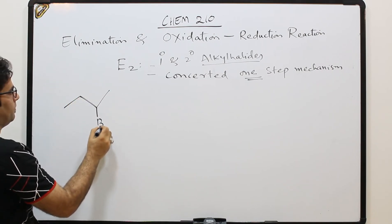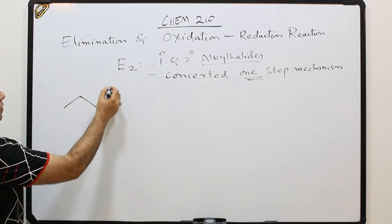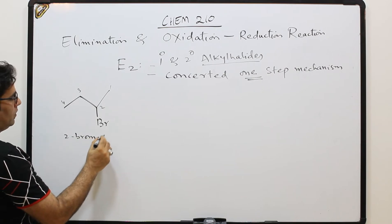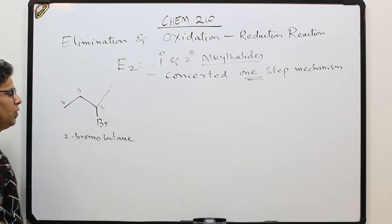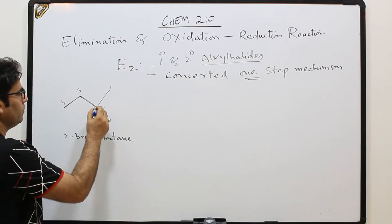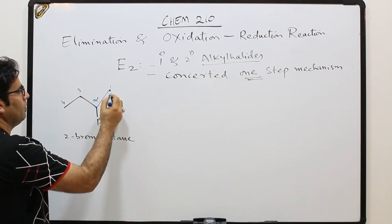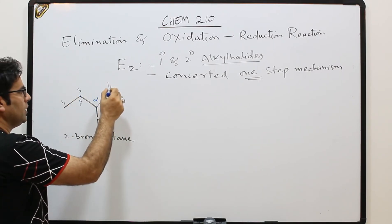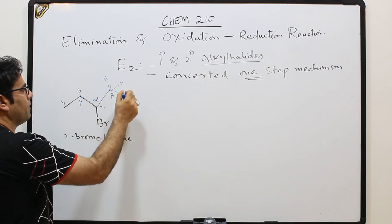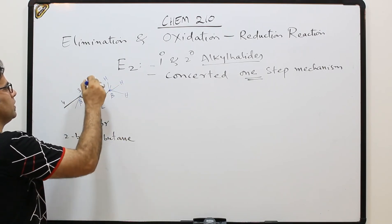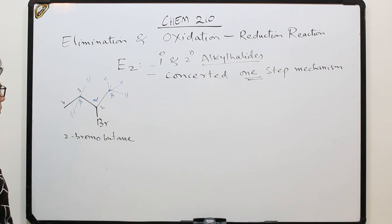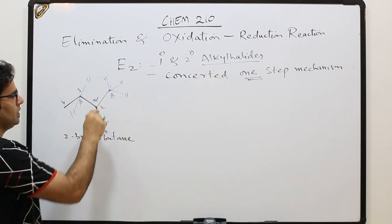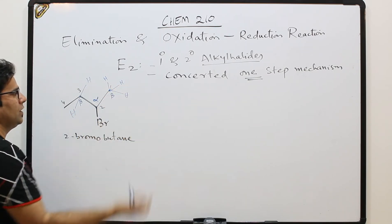Let me give an example: 2-bromobutane — carbons one, two, three, four. This is the alpha carbon where the bromine is attached. The adjacent carbons on each side are the beta carbons. The beta hydrogens on one beta carbon number three, and on the other beta carbon number two. These are all called beta hydrogens.